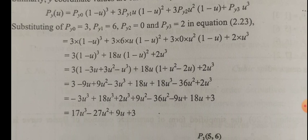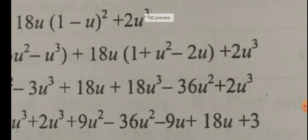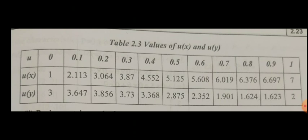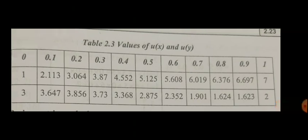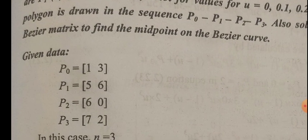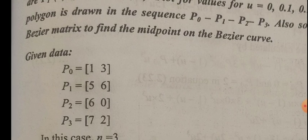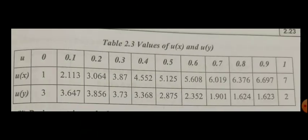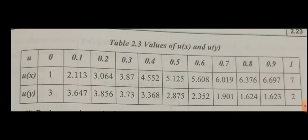We get terms involving 27u^2 plus 9u plus 3. I am going to substitute values of u as 0, 0.1, 0.2, 0.3 up to 1. The first point is (1, 3) and the last point is (7, 2). Substituting these values, I will compute the points on the curve.